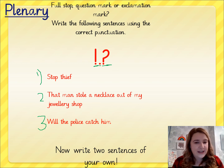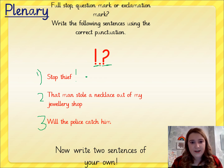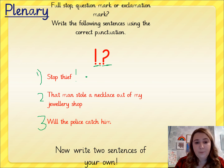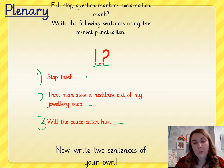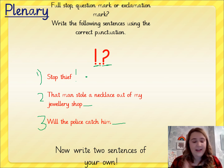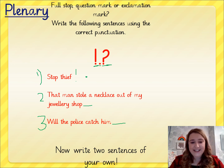The first sentence says: Stop, thief! The second sentence says: That man stole a necklace out of my jewellery shop. The third sentence says: Will the police catch him? Which punctuation needs to go on the end of each? When you've done that, I want you to write two sentences of your own and use an exclamation mark, a full stop, or a question mark. This should be just a quick five-minute activity to make sure you're still thinking about your writing skills. Lovely listening, everybody, and I will see you for English tomorrow.